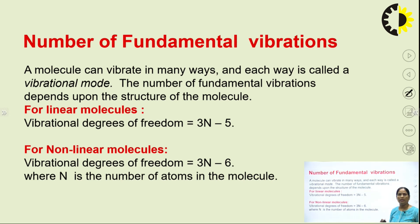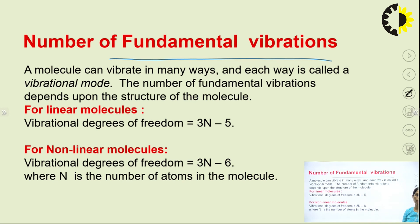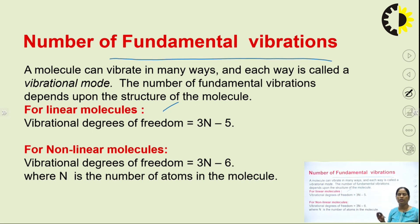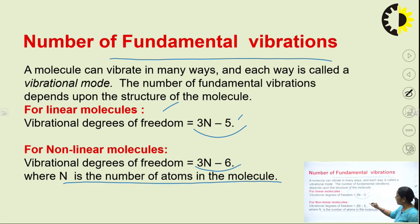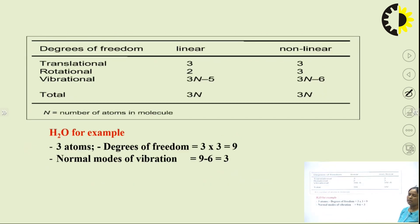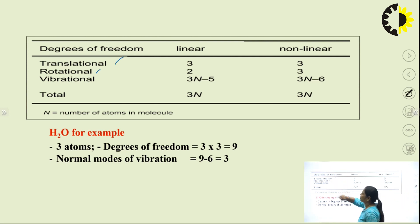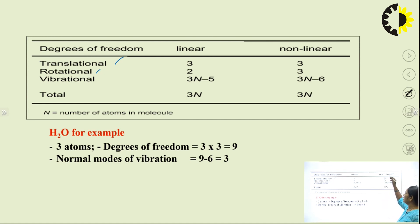Another important question: we can also calculate the number of vibrational changes occurring in a molecule. There are 2 particular formulas. For a linear molecule, the vibrational degree of freedom can be calculated by 3N − 5. For a non-linear molecule, it is 3N − 6, where N is the number of atoms in the molecule. IR spectroscopy shows not only vibrational changes, but also some transitional and rotational changes.